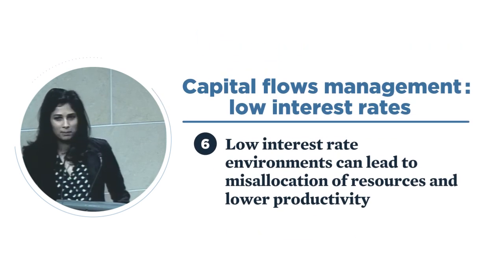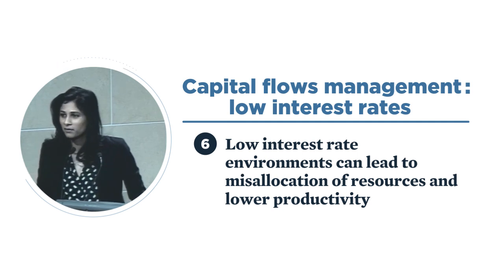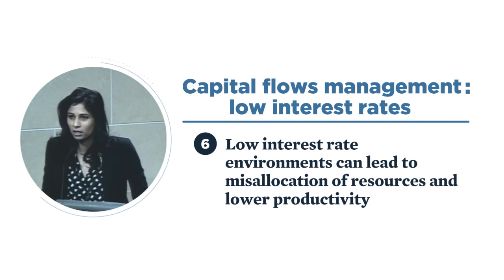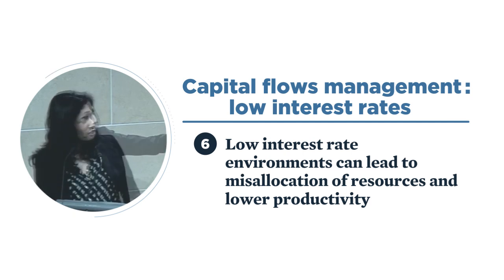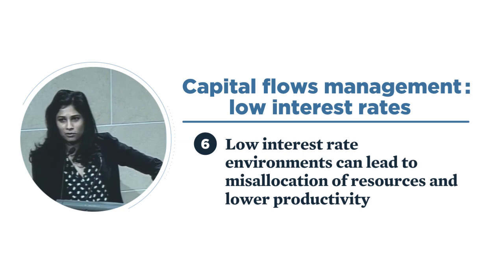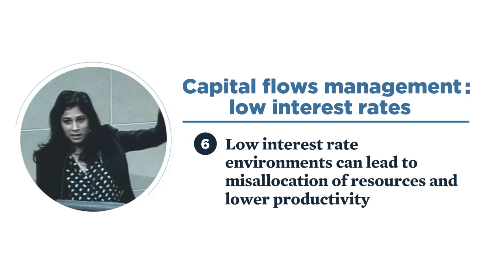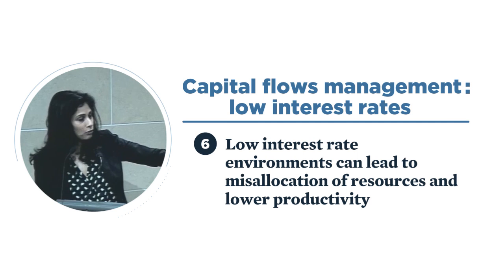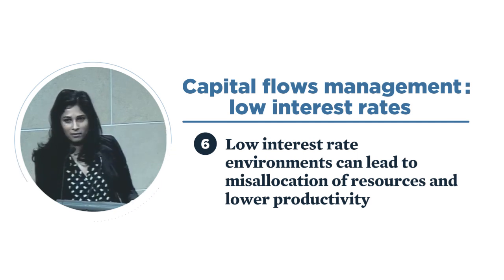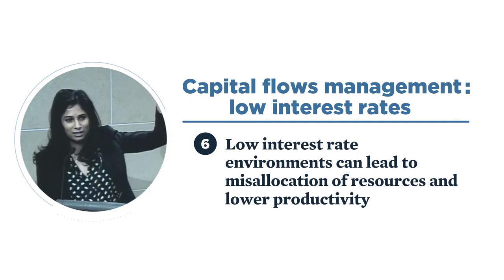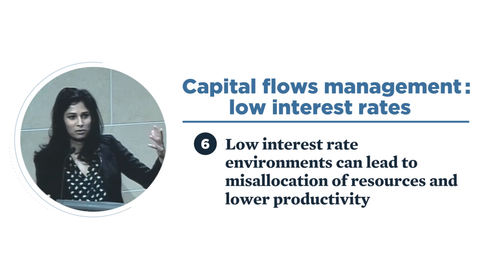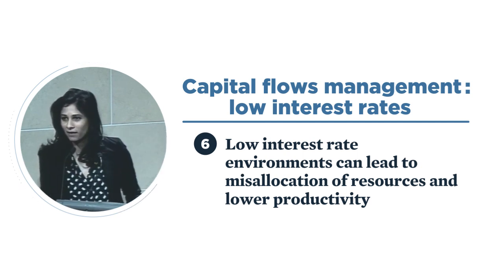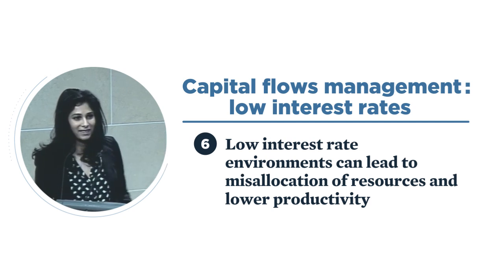To plug my own work: low interest rate environments can lead to misallocation of resources and productivity losses. You see huge amounts of capital flows into Spain before the crisis, and Germany sending capital out. If you look at the path of productivity, you see nice productivity gains in Germany and declining productivity in Spain. This looks like an allocation puzzle — why is capital going from the country with higher productivity growth to the country with lower productivity growth?